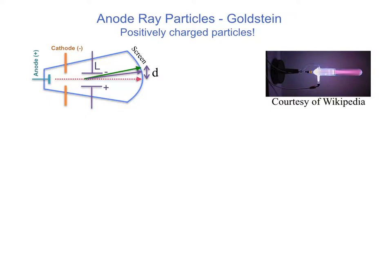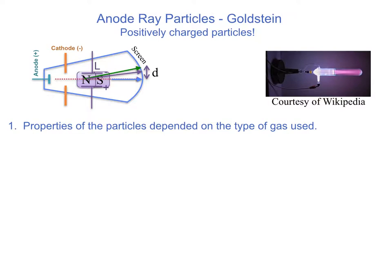When the gas was neon, Thomson found that there are two distinct rays produced. He concluded from this measurement that neon, with the same atomic number, must have two different masses associated with it — two different anode ray particles. He then applied a magnetic field, which restored one of them back to its original position, and measured its charge-to-mass ratio.